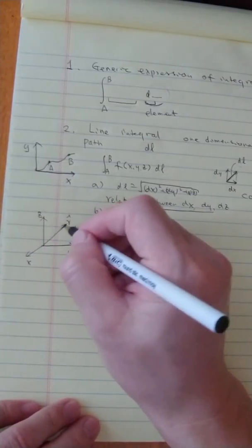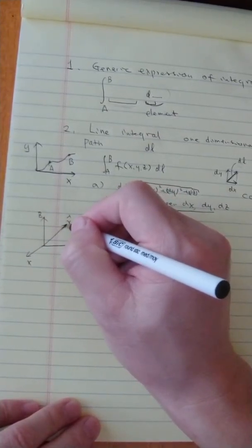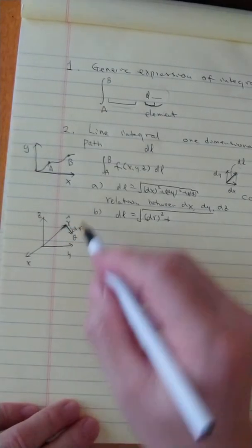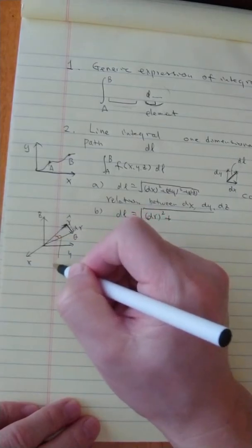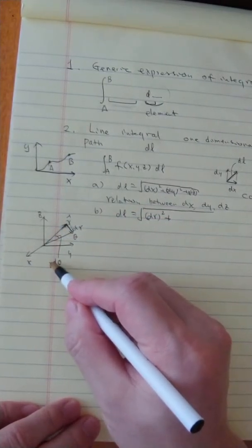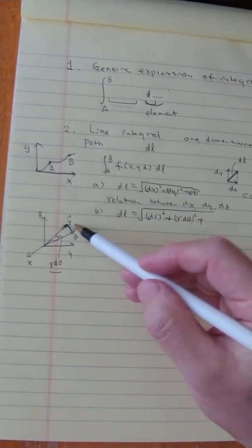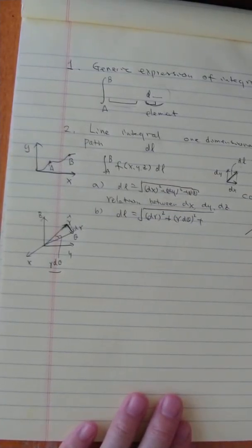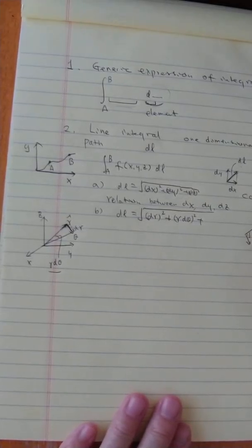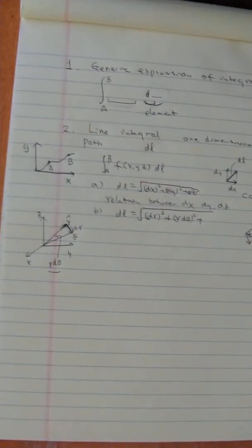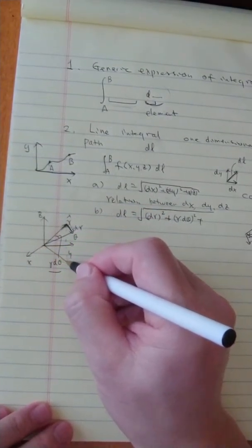Along the theta direction, the angle change is dθ and the radius is r, so the arc length is r·dθ. These two components — dr and r·dθ — are perpendicular to each other, so the hypotenuse when added together is the dl element for those two variables. We could also have a φ change. The φ angle is also perpendicular to r.